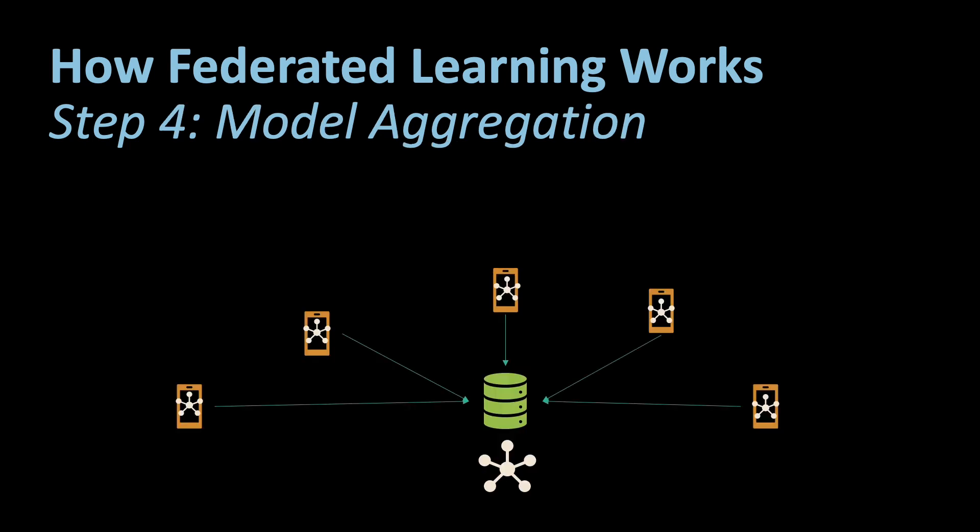The fourth and actually final step is model aggregation. After local training the updated models from all the devices are sent back to the central server or aggregator for model aggregation. So back to our scenario, the smartphones send their locally trained models back to the central server which aggregates the model updates to create a new and improved global model. This process ensures that the knowledge gained from individual devices is pooled together without exposing any private data.